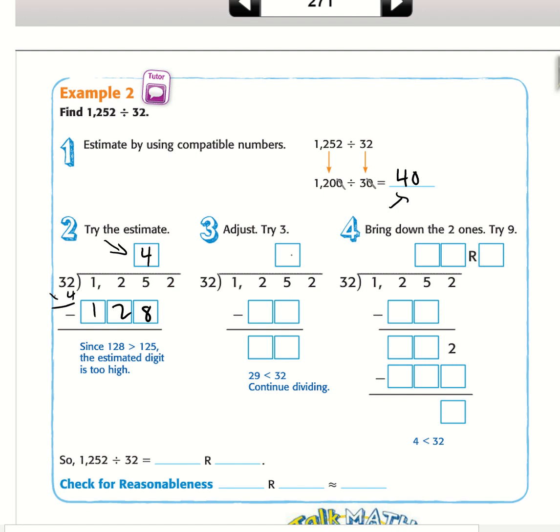Since 4 is too big, we're going to go 1 lower and try 3. 32 goes into 125, we're going to say 3 times. If we multiply 3, it's going to be 6 and then 9. We're going to be doing lots of borrowing. 15 minus 6 equals 9, and 11 minus 9 equals 2. Now we have 29, so we can continue dividing.